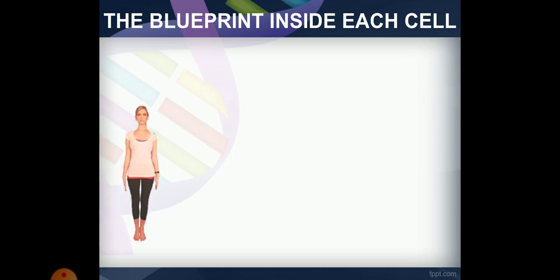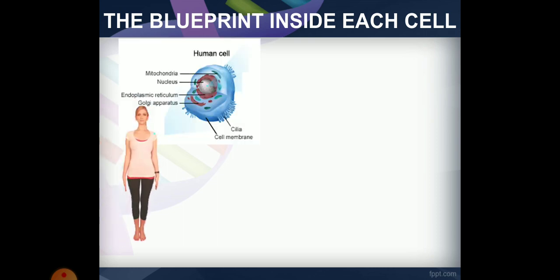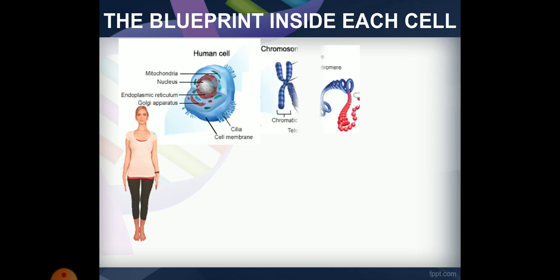There are billions of cells in our body. Inside a cell, you can see the cell structure including the cytoplasm and nucleus. Within the nucleus, there are chromosomes.